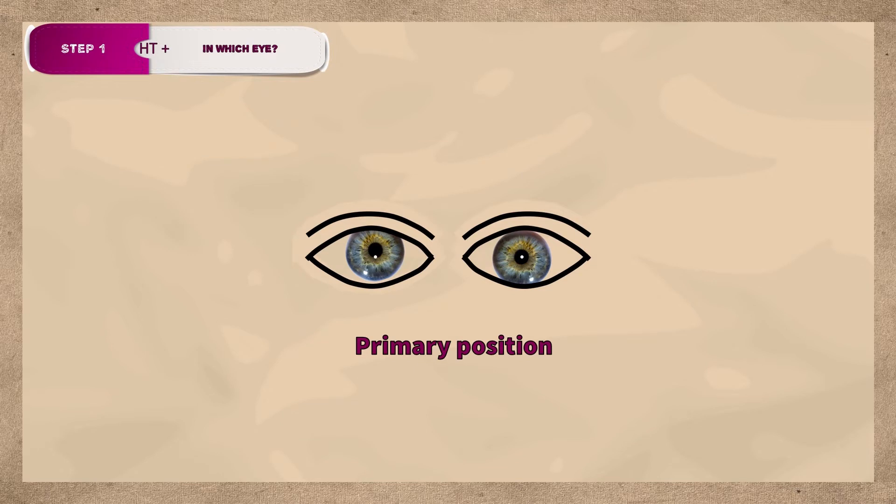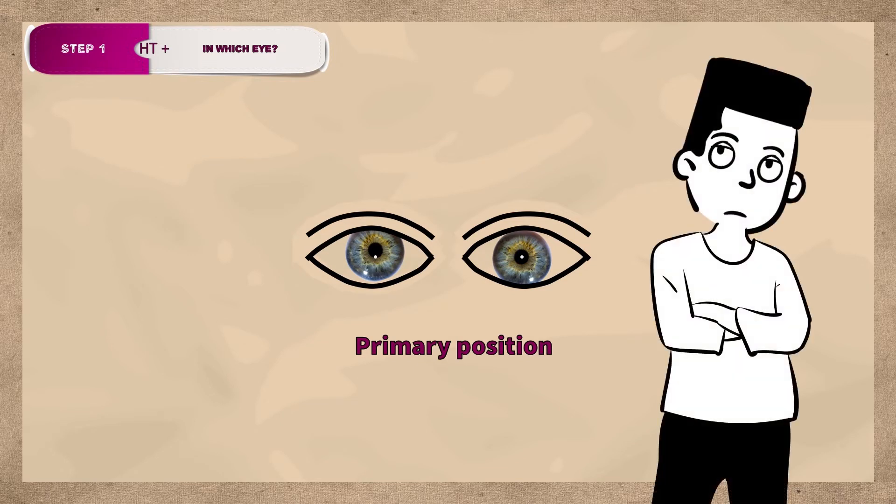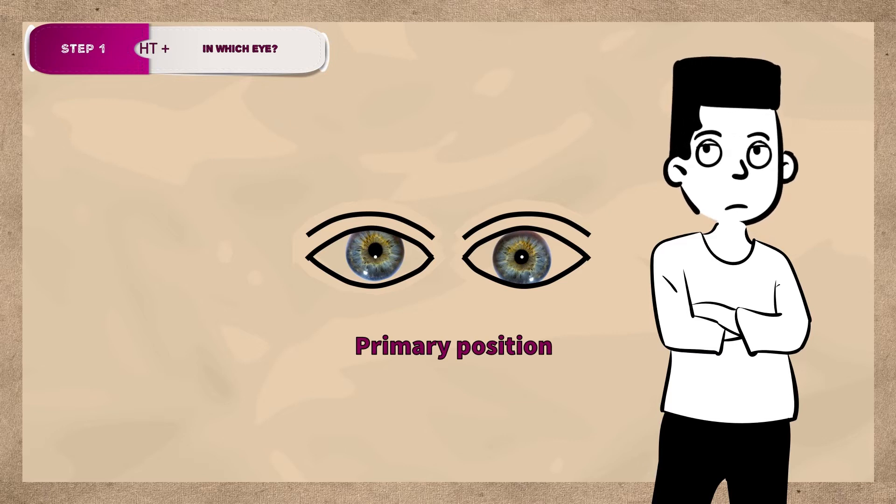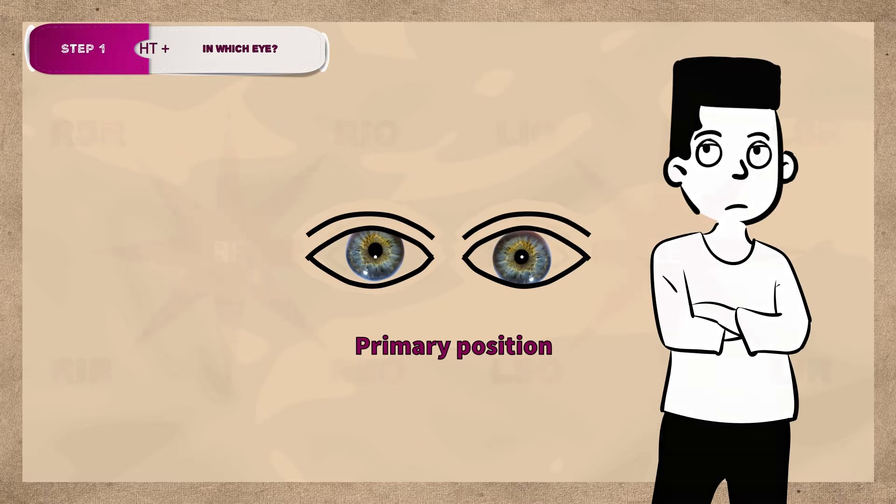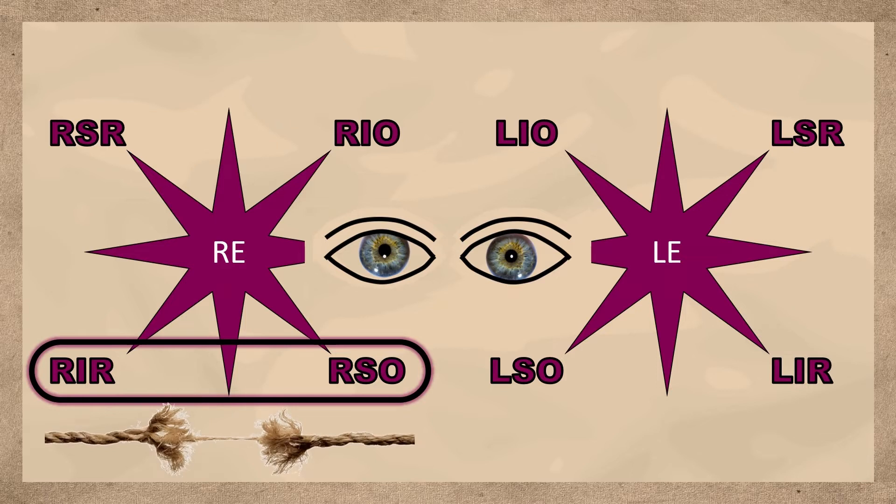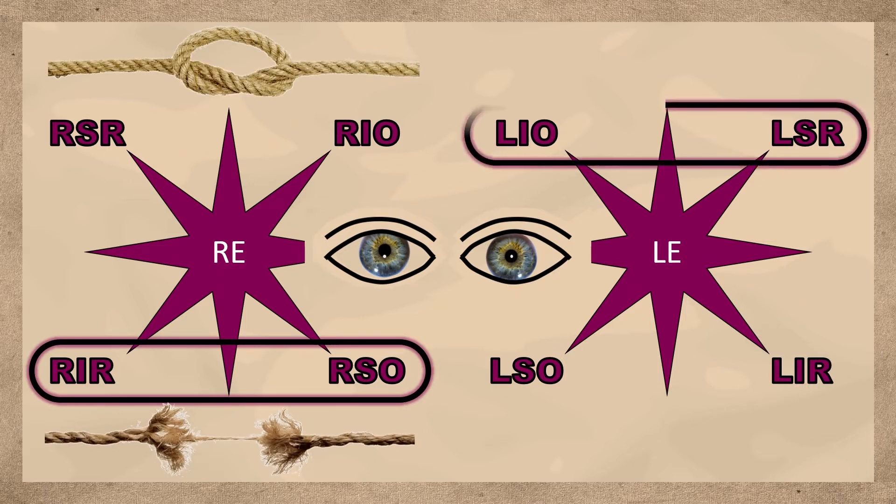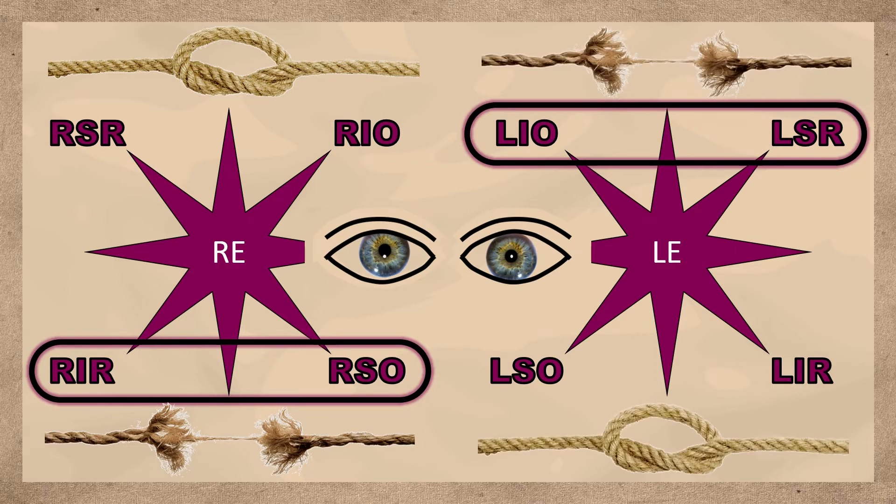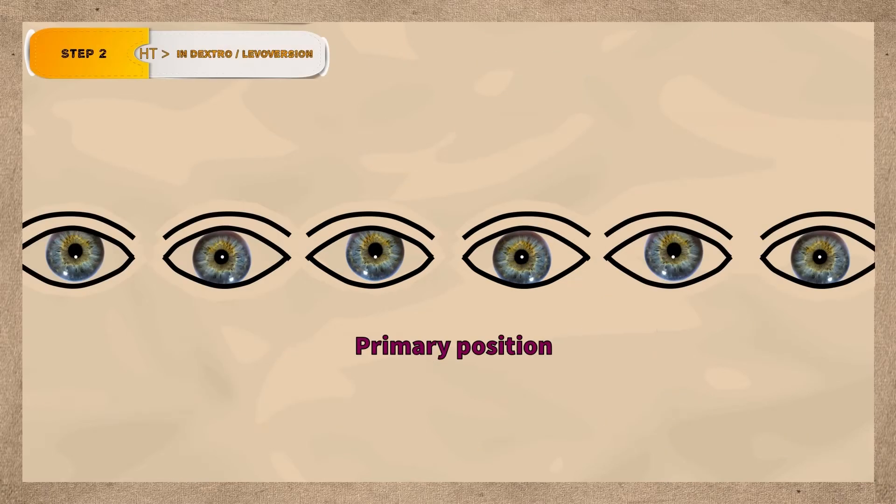Step 1 is to determine which eye is higher using the cover-uncover test while the patient looks at a distant target after straightening the head if there is an abnormal head posture. In this case, the right eye is higher. This means that either the depressors of the right eye are weak leading to unopposed action of the elevators, or the elevators of left eye are weak leading to unopposed action of the depressors. So we have reduced the possible culprit to one of four muscles.